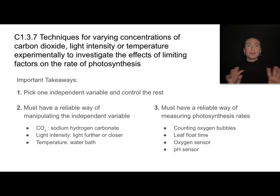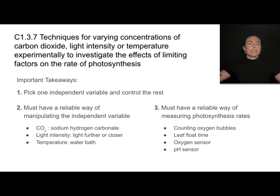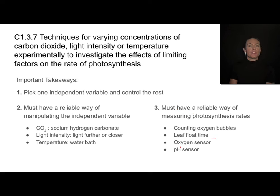The key takeaway is that we need to pick one independent variable and make sure we control the rest. If you're choosing carbon dioxide concentration, you should be using sodium hydrogen carbonate and then controlling light and temperature. The same applies for the other two limiting factors. You must have a reliable way of measuring photosynthesis rates — whether that's counting oxygen bubbles, letting leaves float to the surface, using an oxygen sensor, or a pH sensor.